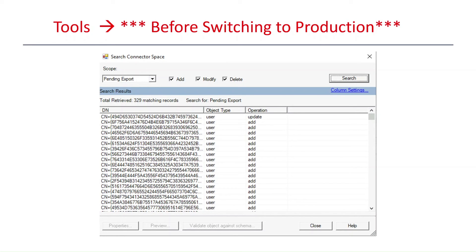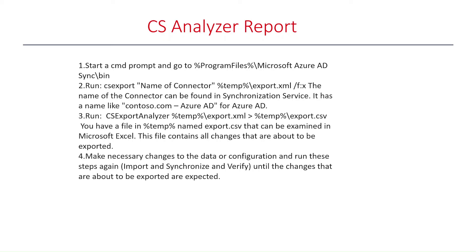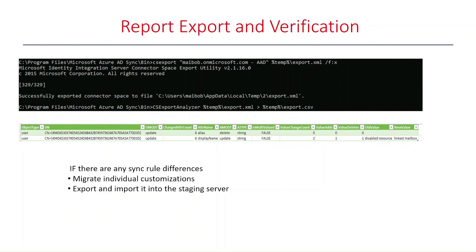Please check the screenshot to see how pending exports look. You can also generate a report that shows the pending changes in the respective connectors during an export cycle. To do that, follow the steps on the screen or check our documentation. If there are any sync rule differences in the report, migrate the individual customization. For example, if a rule was changed on the production server but not on the staging server, find the rule, export and validate it, then import it into the staging server. Then run a full sync and redo the report.